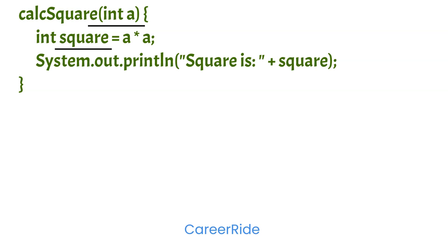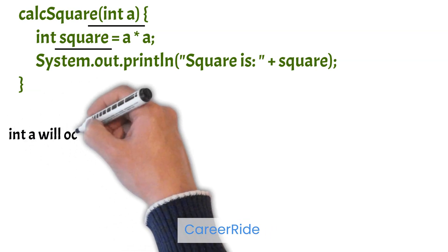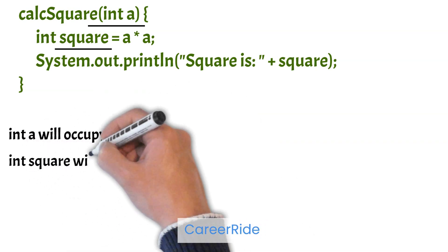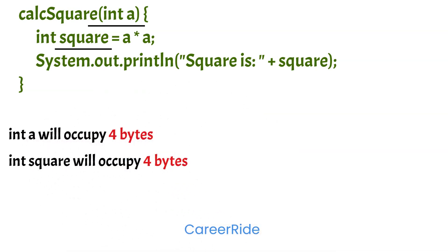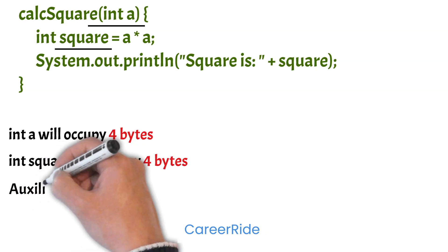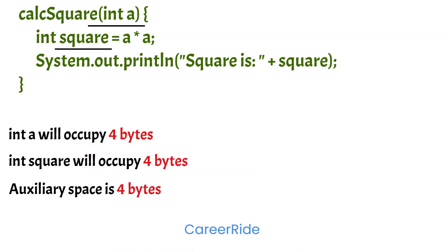Now let us assume that int variable occupies 4 bytes. So int a will occupy 4 bytes and int square will also occupy 4 bytes. Now there is auxiliary space as well that is occupied by function call, print statement, return statement etc. So let us assume that these take some constant space as the number of statements would always be constant and will not change. So let us assume auxiliary space is 4 bytes. So the total estimated space would be 12 bytes.